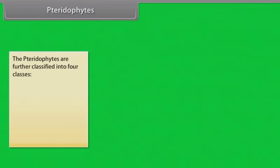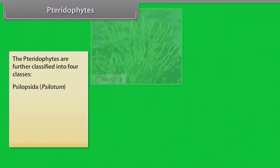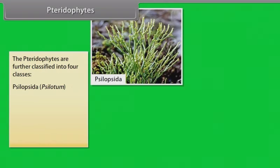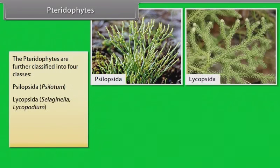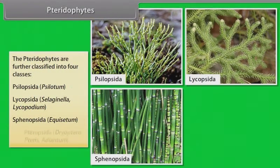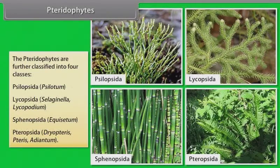The pteridophytes are further classified into four classes: Psilopsida, Psilotum; Lycopsida, Selaginella, Lycopodium; Sphenopsida, Equisetum; Pteropsida, Dryopteris, Pteris, Adiantum.